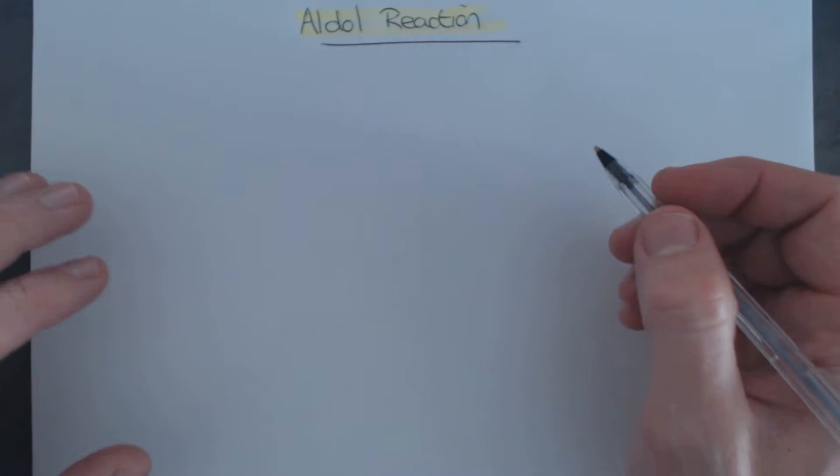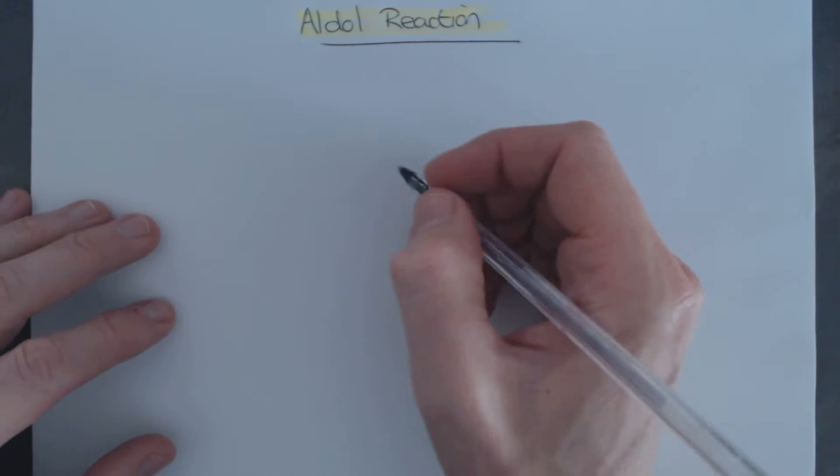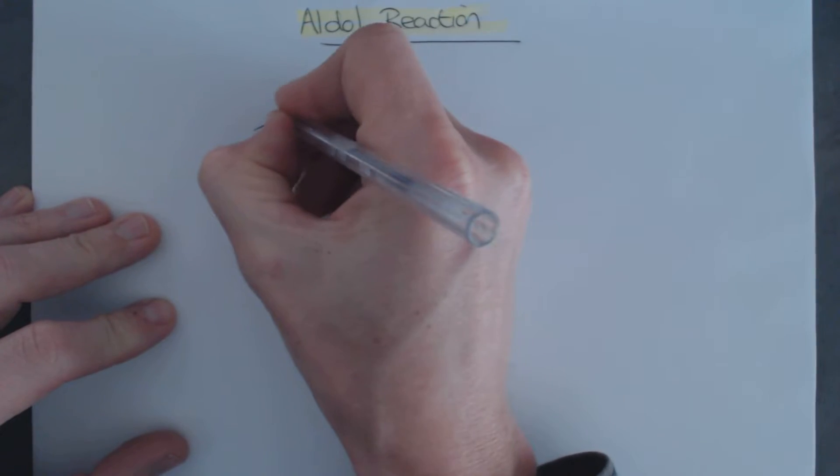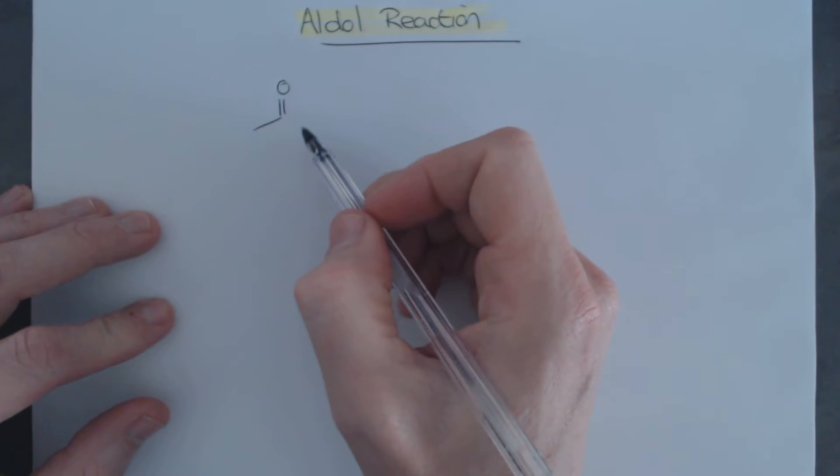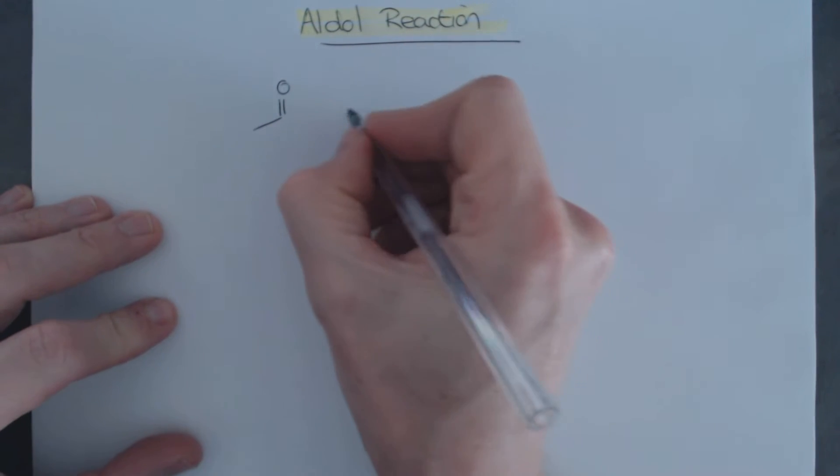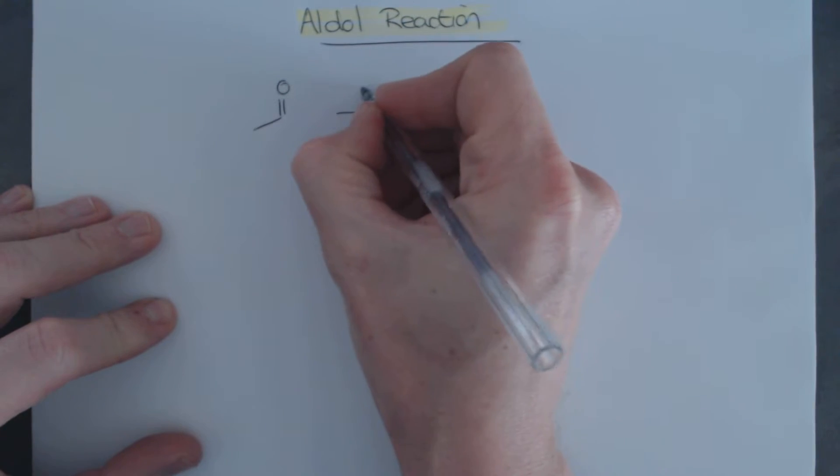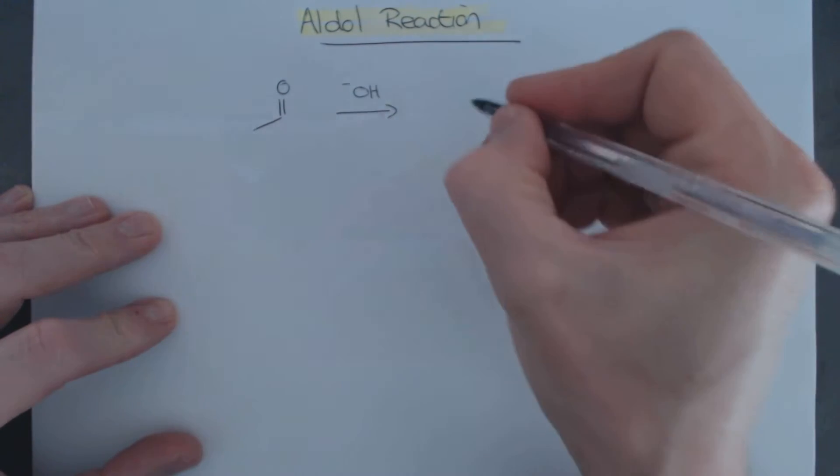The most simple example of an aldol reaction is to take acetaldehyde, which is a very simple aldehyde, and to treat it with base. And the product that we get, the initial product...